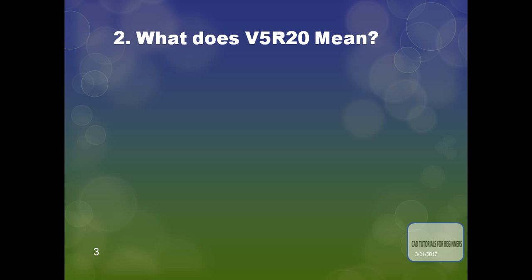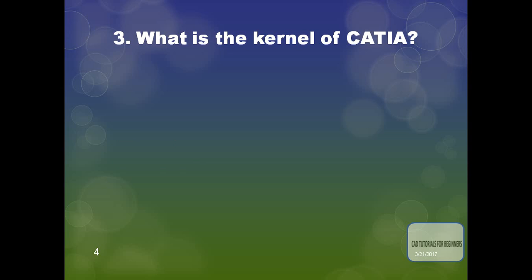The second question is: what does V5 R20 mean? V5 R20 means that V5 is the fifth version and R20 is the 20th release of CATIA.